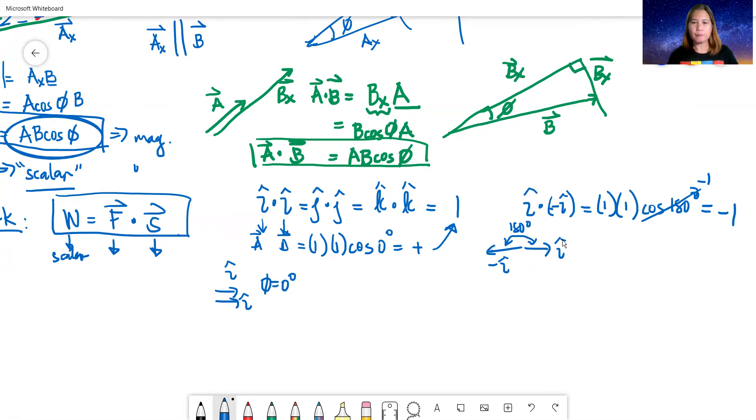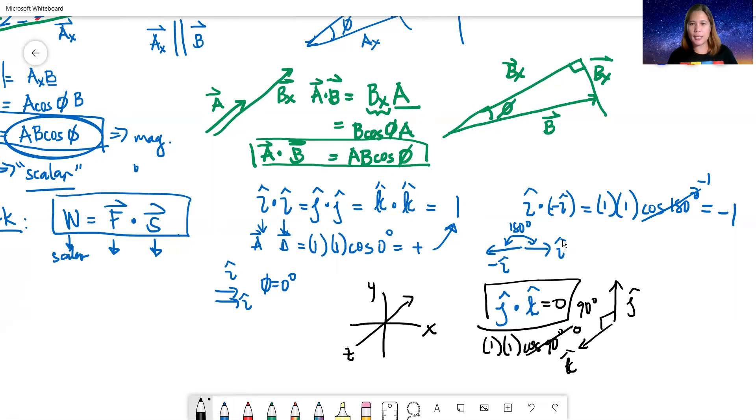What if you have j-hat dot k-hat? If we have our Cartesian plane as usual, this is X, Y, Z. This is positive j-hat going up, tail to tail with positive k-hat here. This makes a 90 degree angle. So j-hat dot k-hat becomes magnitude 1 times 1 cosine 90. What's the cosine of 90? Zero. So the answer here is zero. Why? I said earlier, if the two vectors are perpendicular, then there's no way in the world that they'll have a component that is parallel. So what will you multiply if there's no parallel? That's why it's zero.